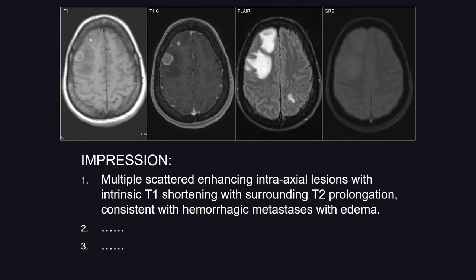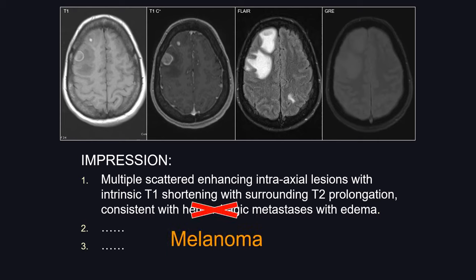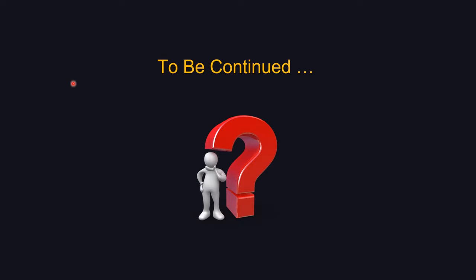Back to our original case. The report reads: multiple scattered enhancing intraaxial lesions with intrinsic T1 shortening and surrounding T2 prolongation, consistent with hemorrhagic metastases with edema. What is incorrect? T1 shortening doesn't necessarily mean blood. The GRE is negative for susceptibility artifact. Other causes of T1 shortening include gadolinium, fat, methemoglobin, and melanin. So this is not hemorrhagic metastasis, but rather metastases from melanoma. This concludes Part 1 of the lecture. Thank you.